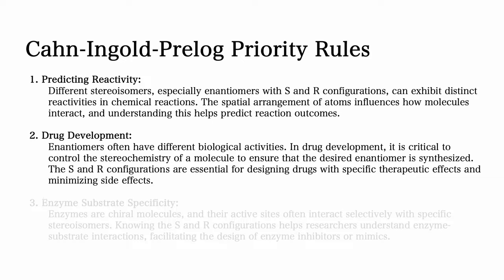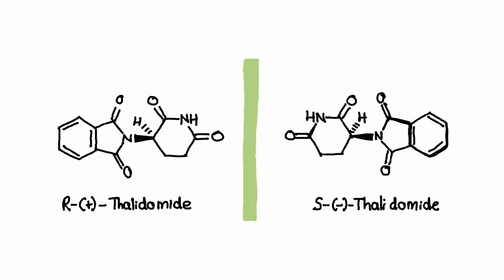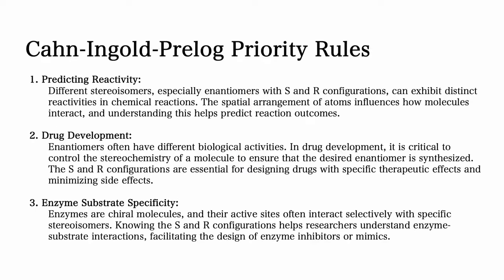This is particularly important in drug development. Enantiomers often have different biological activities, so it is critical to control the stereochemistry of a molecule to ensure the desired enantiomer is synthesized and harmful ones are avoided. The S and R configuration is essential for designing drugs with specific therapeutic effects and minimizing side effects. This was very evident in the example of thalidomide, where one enantiomer was therapeutic and helped with nausea in pregnant women, whereas the other caused severe birth defects.